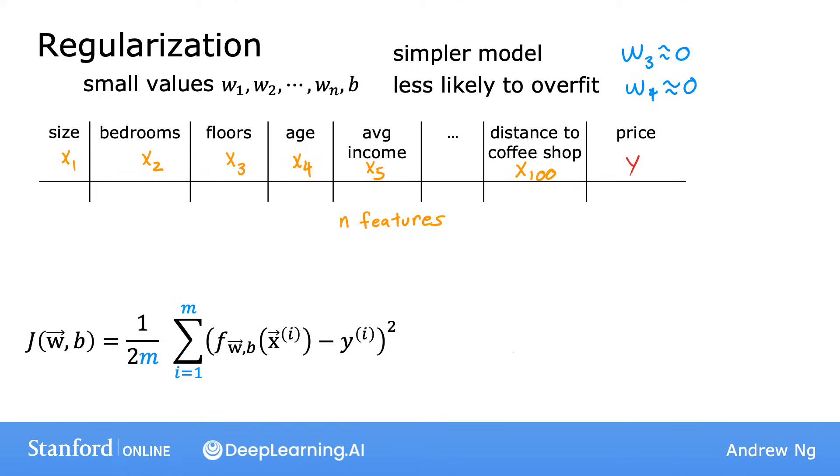So for this example, if you have data with 100 features for each house, it may be hard to pick in advance which features to include and which ones to exclude. So let's build a model that uses all 100 features. So you have these 100 parameters, w1 through w100, as well as the 101st parameter b. Because we don't know which of these parameters are going to be the important ones, let's penalize all of them a bit and shrink all of them by adding this new term lambda times the sum from j equals 1 through n, where n is 100, the number of features, of wj squared.